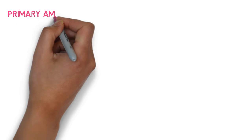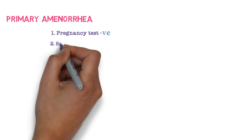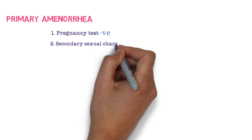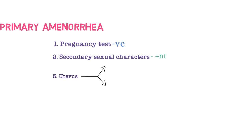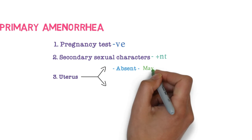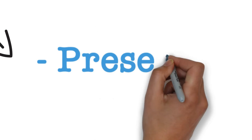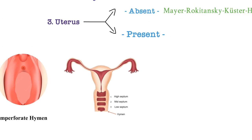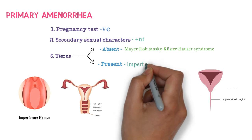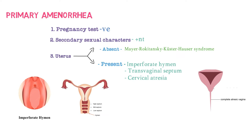Let's talk about Primary Amenorrhea. After a negative pregnancy test, we look for secondary sexual characters. If secondary sexual characters are present but there are no periods, there may be absent uterus. Other causes include imperforate hymen, transverse vaginal septum, or cervical atresia — conditions where bleeding cannot come out from the vagina.